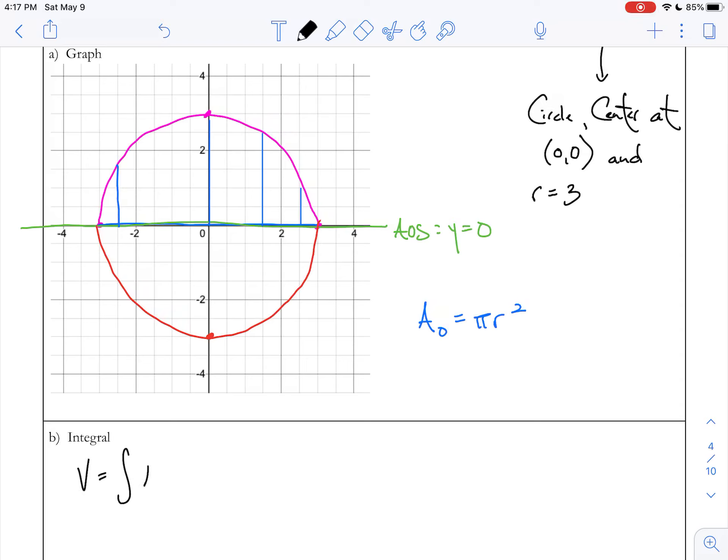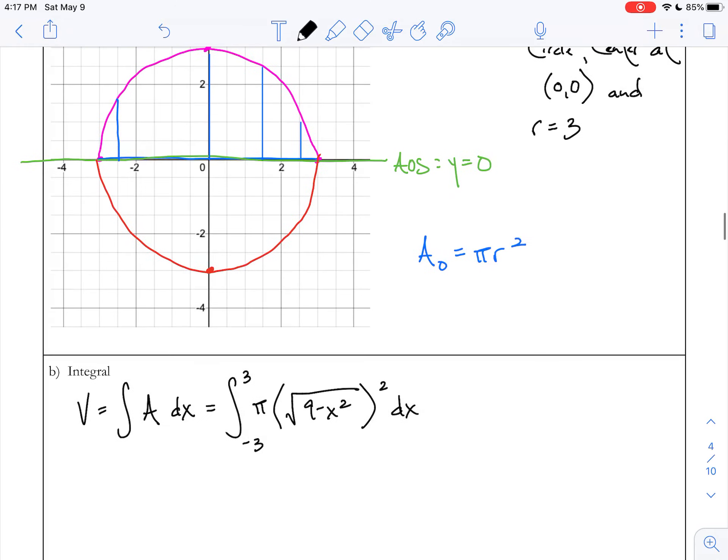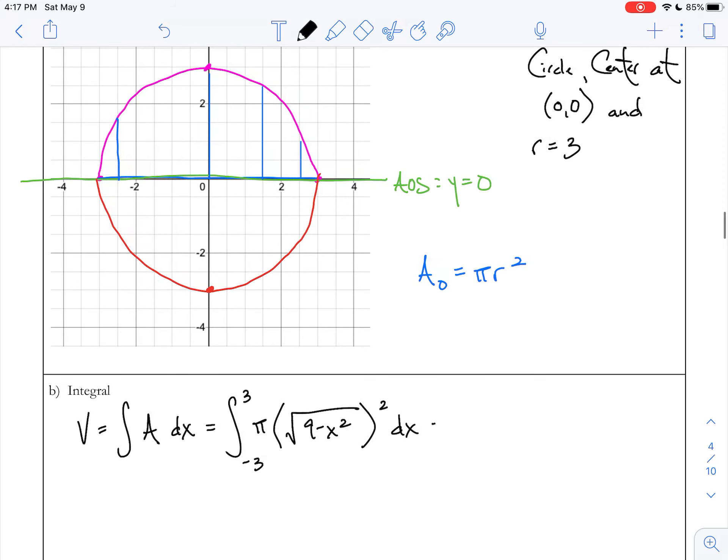Okay, now let's set up our integral. We know that volume equals the integral of the area, and because my blue lines are perpendicular to the axis of revolution, I know it's going to be dx. So I know that I can take the integral from -3 to 3 of π(radius)² dx.